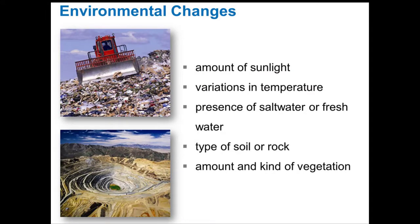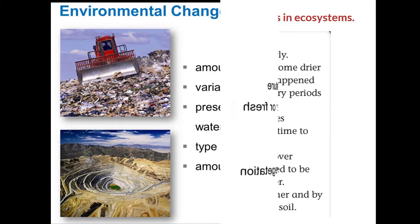We talk about the amount of sunlight, the variation in temperature, the presence of salt water or fresh water, type of soil or rock, and the amount and kind of vegetation.